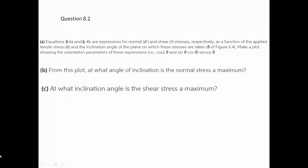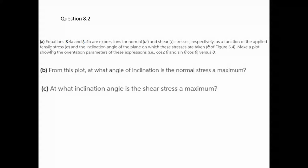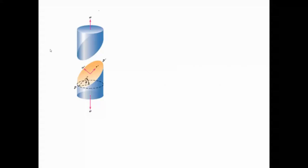Let's look at a question from Chapter 8 of Callister, which is about mechanical properties of metals. This question references equations 8.4a and 8.4b, which are expressions for normal and shear stresses as a function of the applied tensile stress and the inclination angle of the plane on which these stresses are taken, based on a figure from the book.